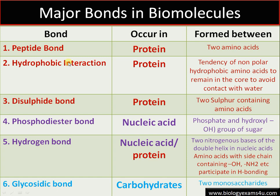These are the major bonds at a glance. First is the peptide bond in protein, which connects two amino acids. Then there are hydrophobic interactions in proteins and a disulfide bond in proteins. In DNA, there is the phosphodiester bond, then the hydrogen bond that connects two strands — also present in proteins — and in carbohydrates the bond is a glycosidic bond.